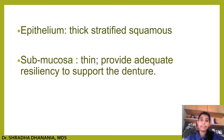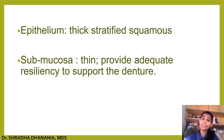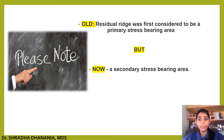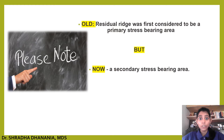Histologically, the ridge is lined by thick stratified squamous epithelium. Even though the submucosa is thin, it still provides sufficient resiliency to support the denture. Importantly, in earlier times the residual ridge was considered a primary stress-bearing area, but now it is classified as secondary due to continuous bone resorption as the span of edentulism increases.